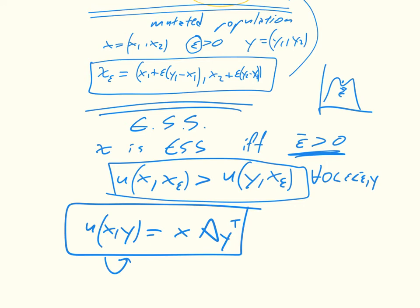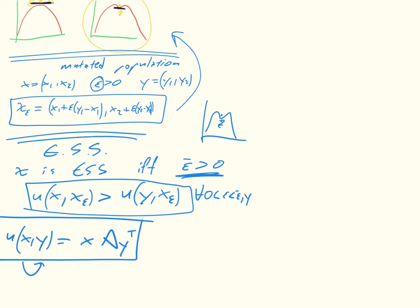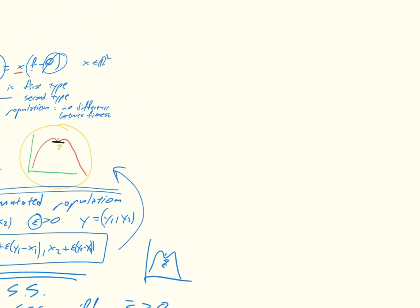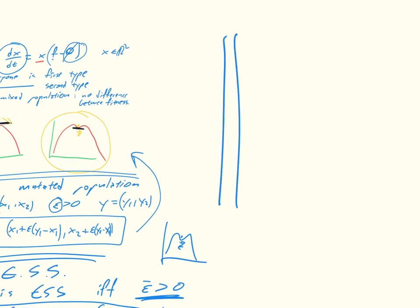how we can kind of compute this, so if we go back to, let me go up here, if we go back to what our matrix A was, which was a, b, c, d, and that inequality, which let me just write it down again, so utility of x x epsilon is greater than the utility of y x epsilon.